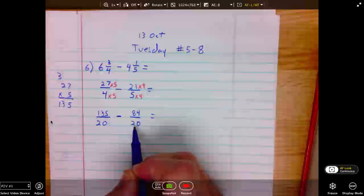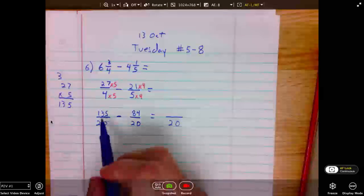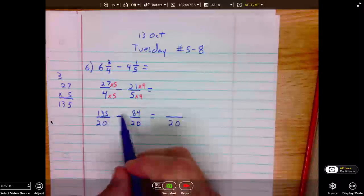Now that we've obtained our common denominator, we're ready to subtract. The denominator stays the same. The numerator, we will simply subtract. 135 minus 84.